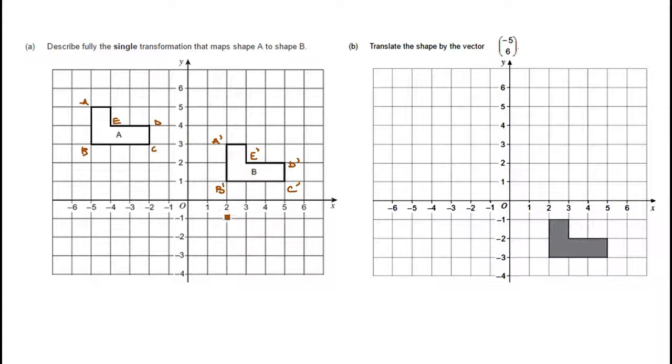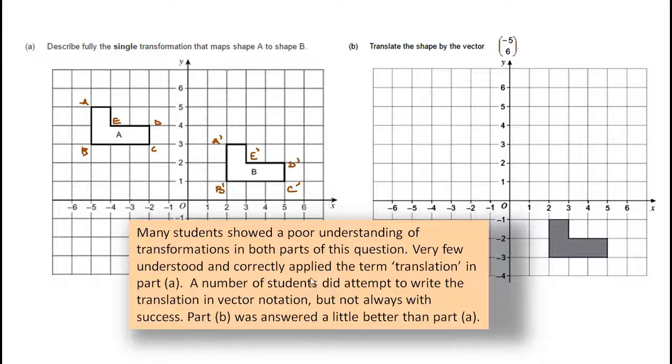Let's have a look at the examiner's remarks. They say many students showed a poor understanding of transformations in both parts of this question. Very few understood and correctly applied the term translation in Part A. This is in fact a translation. A number of students did attempt to write the translation in vector notation, but they didn't always do that with success. Part B was answered a little better than Part A.